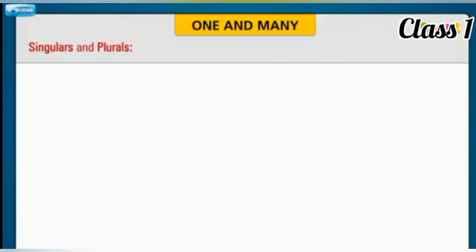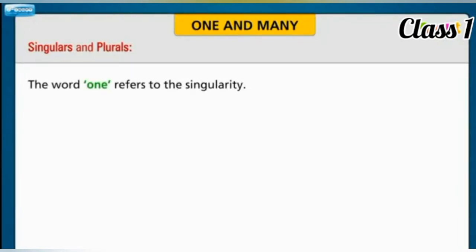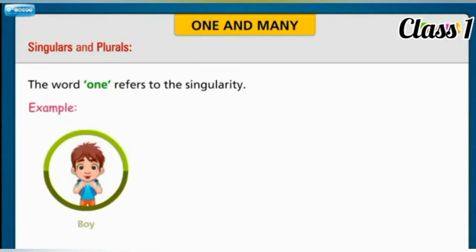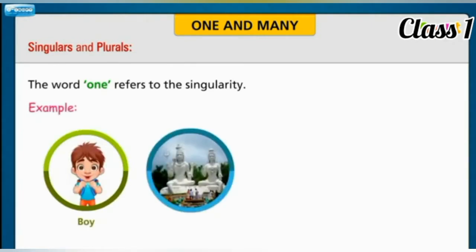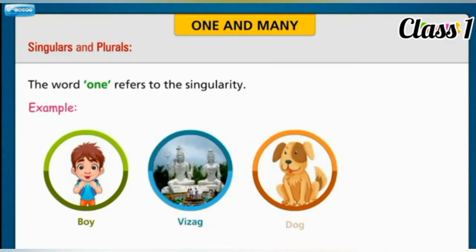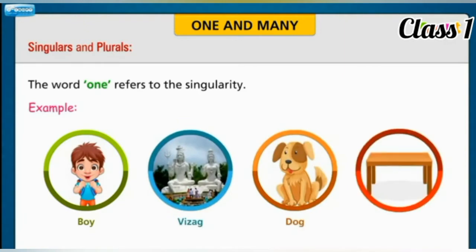Let us know about the singulars and plurals. The word 'one' refers to the singularity. For example: boy, Vizag, dog, table.